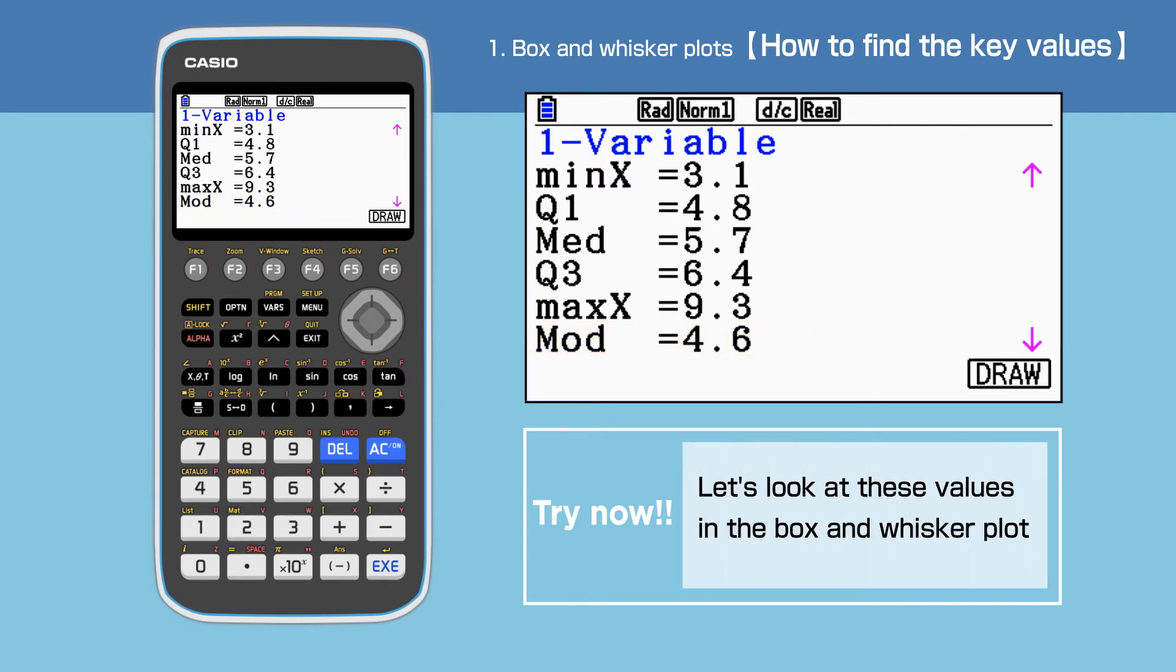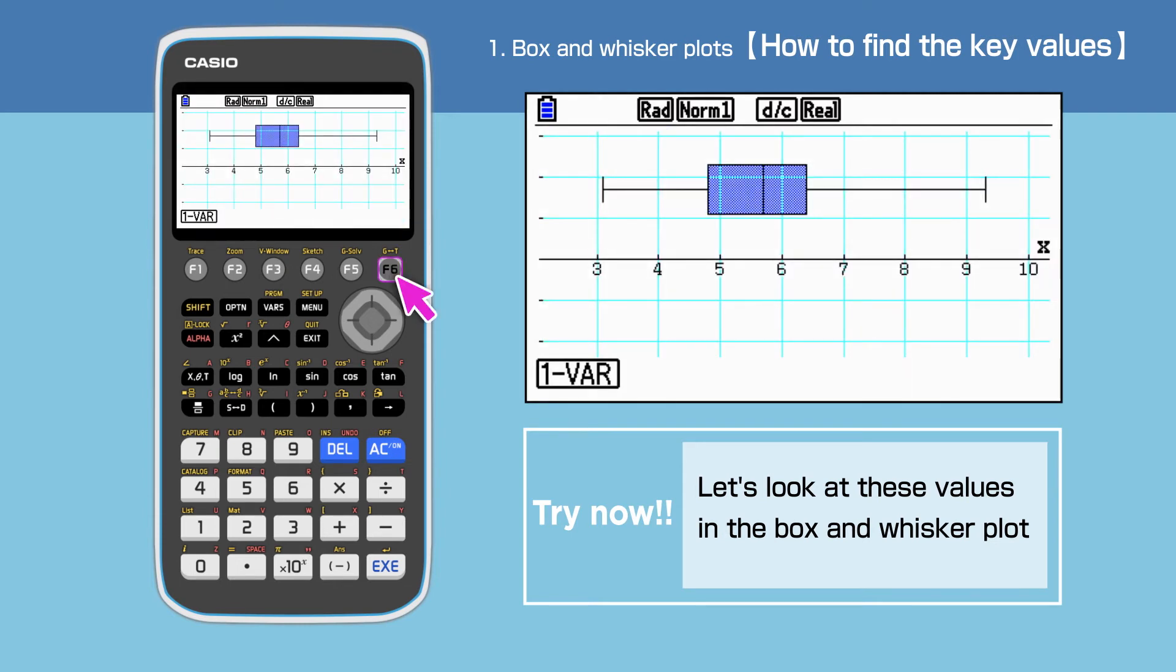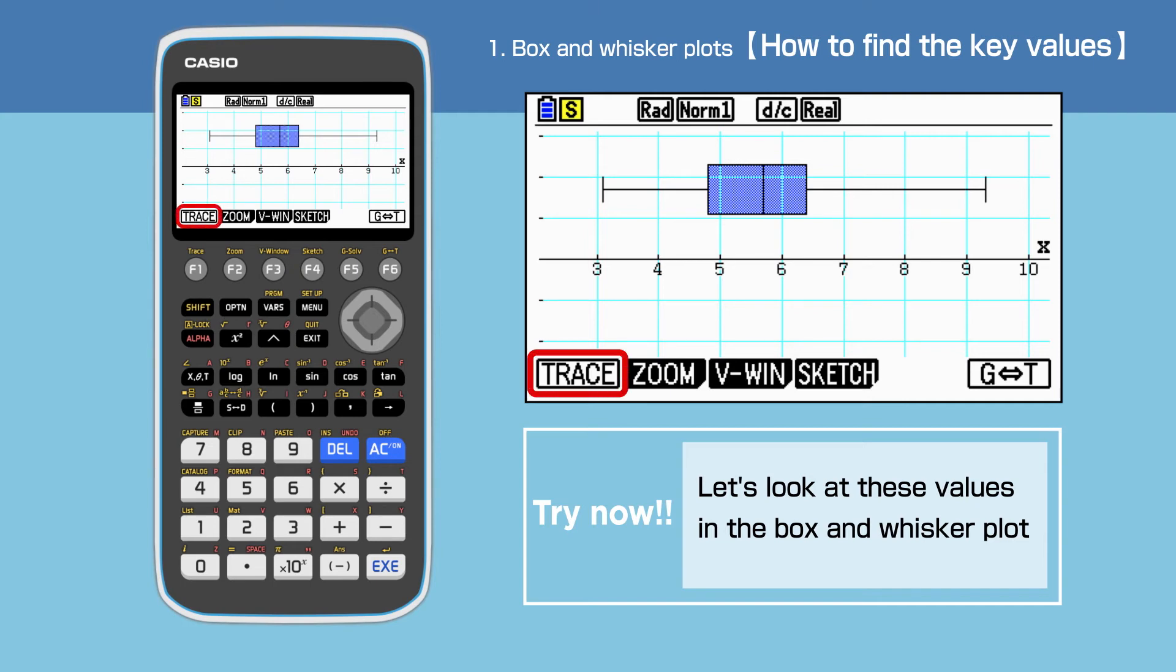Let's check these values in the box and whisker plot. Press F6 to draw. Press shift to display the command menu, then press F1 to trace minimum, Q1, median and so on to check these values.